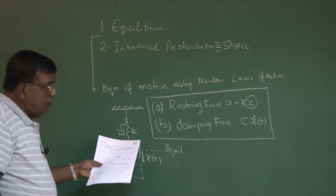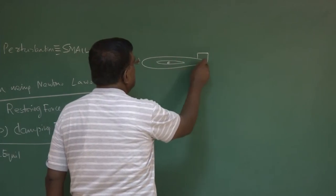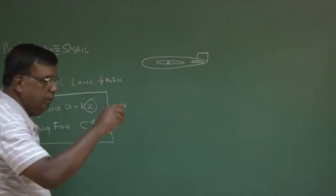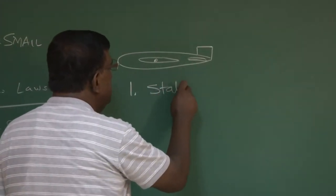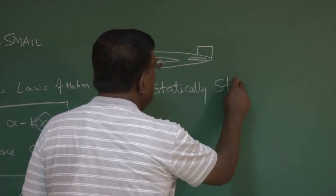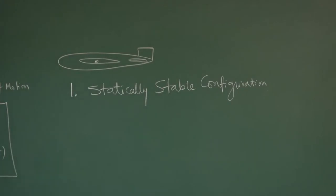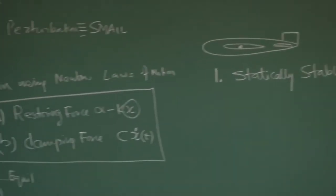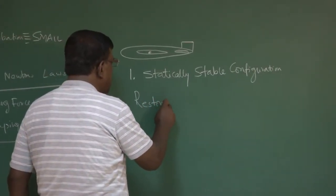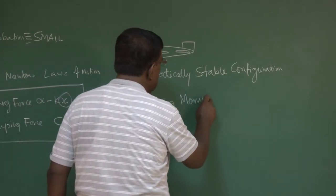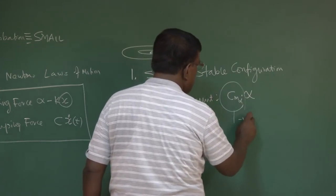When you try to model aircraft motion — one-dimensional pitching motion, that is, only pitching is allowed — here also we have noticed that we are considering a statically stable configuration. The moment I say statically stable, it means the restoring moment force was also proportional to alpha. We say C_m_alpha times alpha, and of course C_m_alpha is negative, so that is why it is restoring — similar to kx.